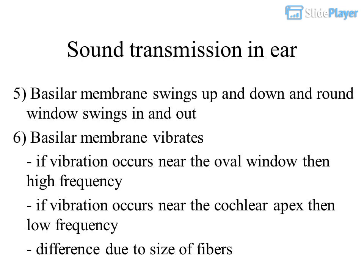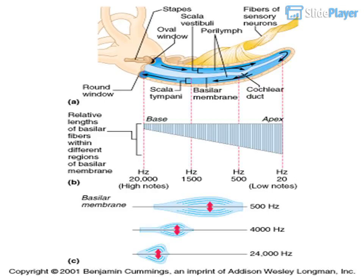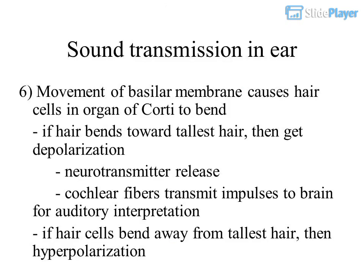The basilar membrane swings up and down while the round window swings in and out. The basilar membrane vibrates: if vibration occurs near the oval window, then high frequency is detected; if vibration occurs near the cochlear apex, then low frequency is detected. This difference is due to the size of the fibers. Movement of the basilar membrane causes hair cells in the organ of Corti to bend. If the hair bends toward the tallest hair, depolarization and neurotransmitter release occur, and cochlear fibers transmit impulses to the brain for auditory interpretation. If hair cells bend away from the tallest hair, then hyperpolarization occurs.